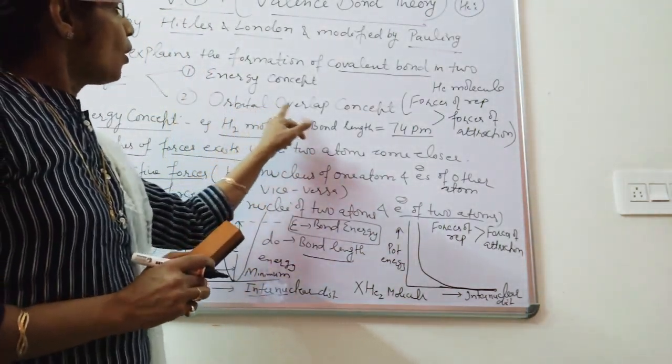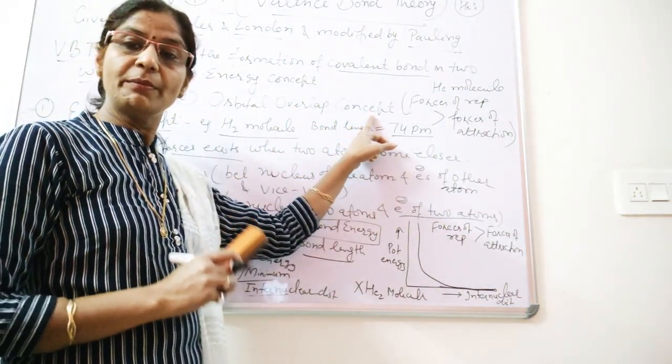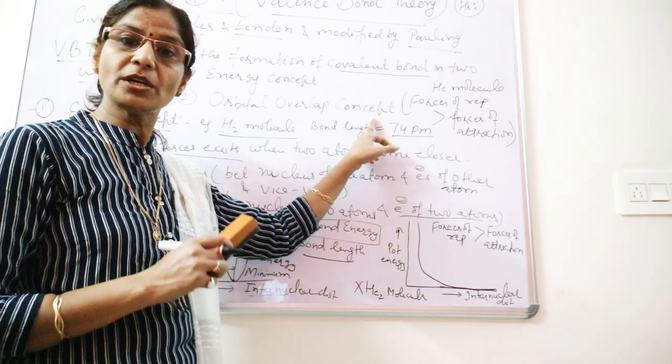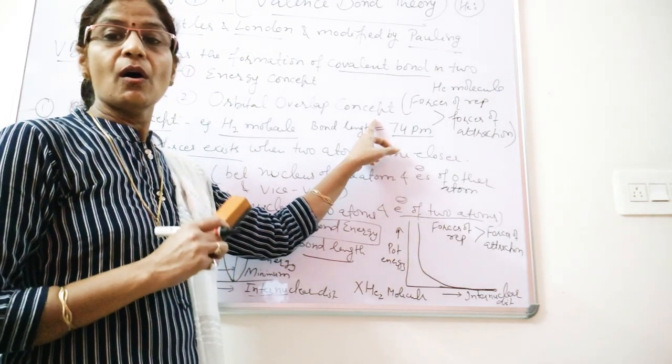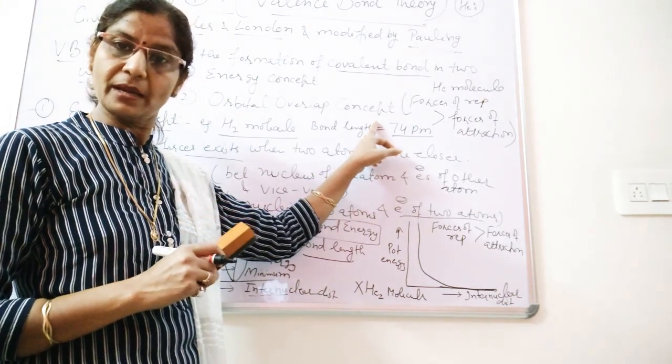The second concept is orbital overlap concept. According to this concept, VBT explains the formation of a covalent molecule on the basis of orbital overlap. We will study about this second concept.